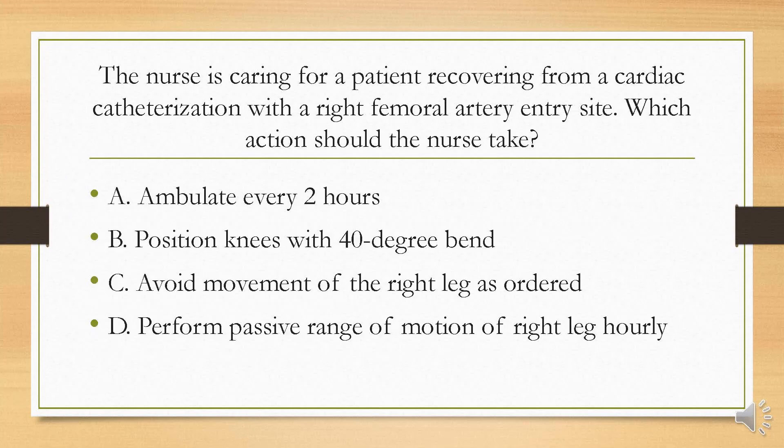The nurse is caring for a patient recovering from a cardiac catheterization with a right femoral artery entry site. Which action should the nurse take? Is it A, ambulate every two hours; B, position knees with a 40-degree bend; C, avoid movement of the right leg as ordered; or D, perform passive range of motion of the right leg hourly?